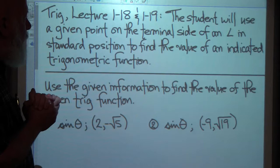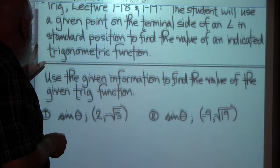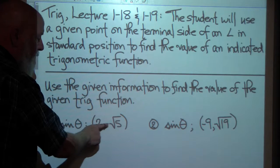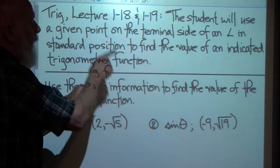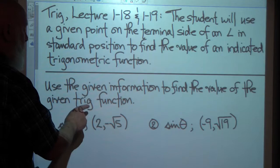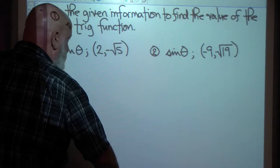Trig lectures 118 and 119. The student will use a given point on the terminal side of an angle in standard position to find the value of an indicated trigonometric function. We're going to use the given point on the terminal side of an angle — the positive x-axis is the initial side, rotating positively or negatively to go through this point. Use the given information to find the value of the trig function.